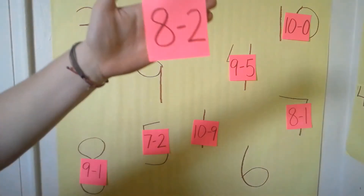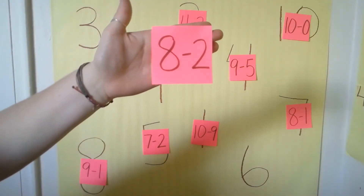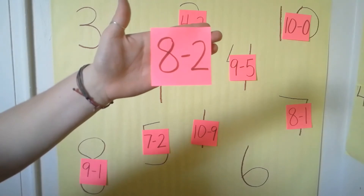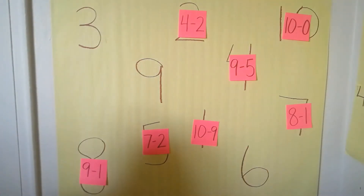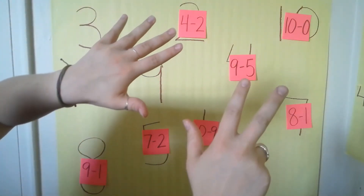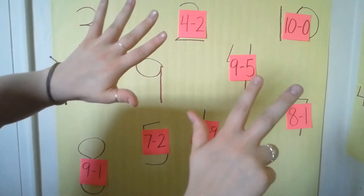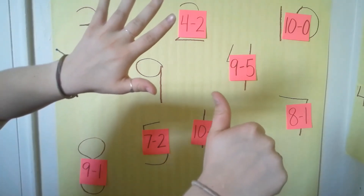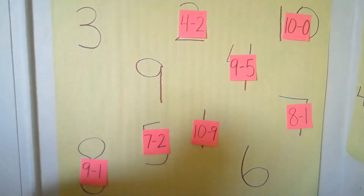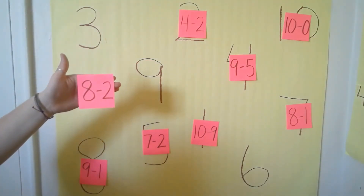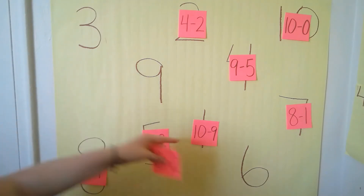Our next number sentence is eight minus two. Do you know what eight minus two is? Let's check using our fingers. First we need to hold up eight fingers, and we're going to take away two. One, two. How many fingers are left? Six. So our answer to eight minus two is six. Can you find the six? Yes, all the way at the bottom.